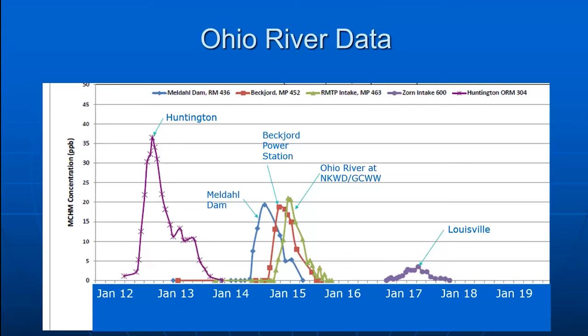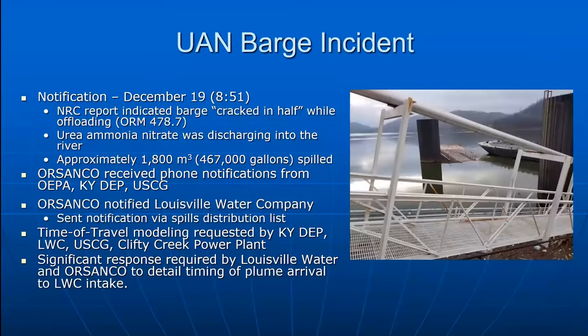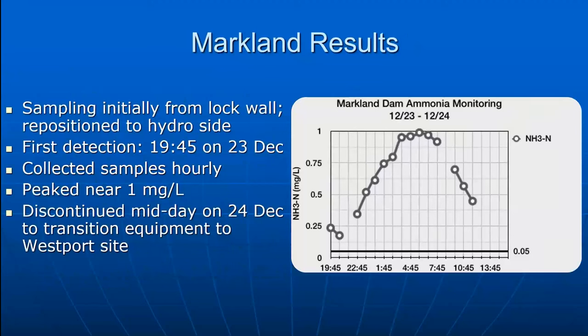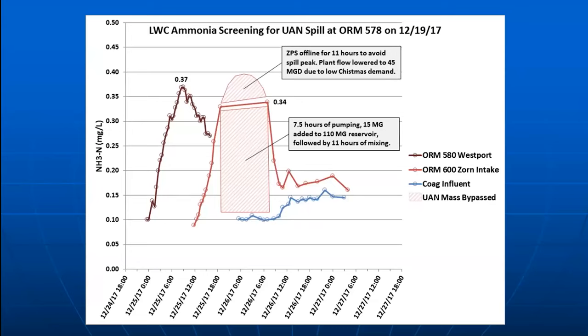As a utility operator or government entity, imagine how valuable it is to have that type of information for a chemical that nobody really knew anything about — we had some estimates of its potential health risk impact, but this was invaluable data. In 2017, there was a urea ammonium nitrate barge failure with thousands of gallons of this fertilizer chemical that could cause significant impacts to drinking water utilities. We tracked it heading towards Louisville Water Kentucky utility, which serves over a million people, and the equipment allowed us to monitor, detect, and quantify the contaminant plume — helping them close their intakes for a very short period to shave off the bulk of it.